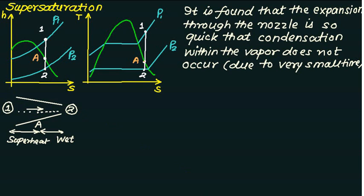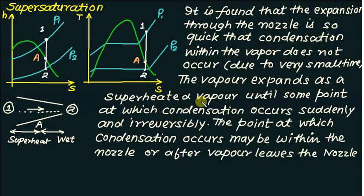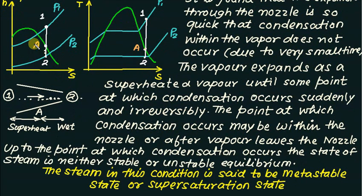So what is found is that expansion through the nozzle is so quick that condensation within the vapor does not occur, due to very small time. We expect a 100% phase change at point A, but this phase change is delayed. That particular region is called the supersaturation region. The vapor expands as superheated vapor until some point at which condensation occurs suddenly and irreversibly. After this point the steam should actually be wet, but it continues to appear as superheated steam. Up to that point, the state of the steam is neither stable nor in unstable equilibrium, and this condition is said to be the metastable state or supersaturation state.